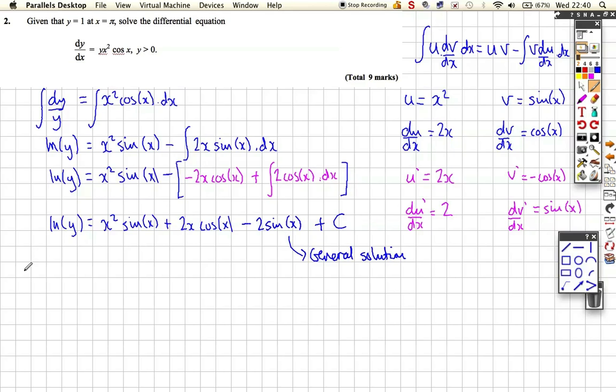We've now got some boundary conditions or some initial conditions. We're told from the question, when y equals 1, x is equal to pi. So we just have to go through and put all these things in. Log of 1, which we all know is 0. So 0 is equal to...